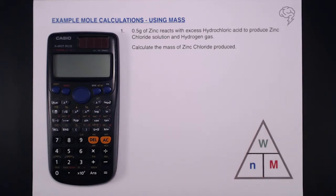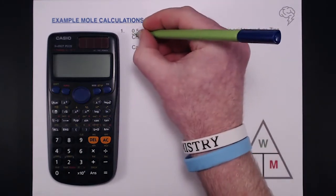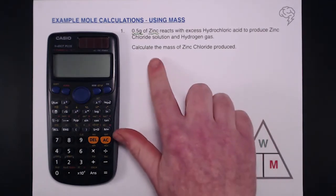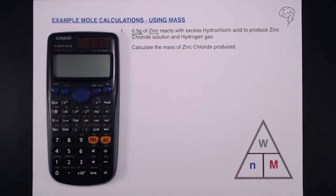Let's look at this first question. We've got 0.5 grams of zinc reacts with excess hydrochloric acid to produce zinc chloride solution and hydrogen gas. Calculate the mass of zinc chloride produced. We always look at what information we've got in the question first. Looking through the question we've only got a mass of zinc. We need to figure out what mass of zinc chloride was actually produced.